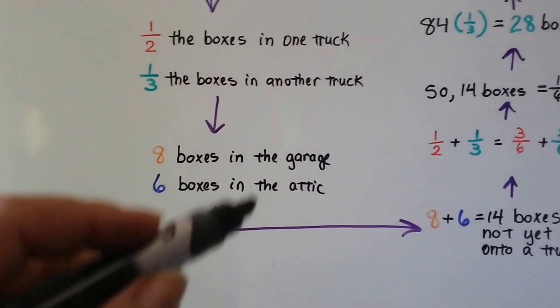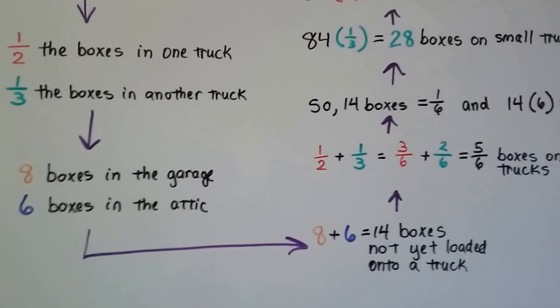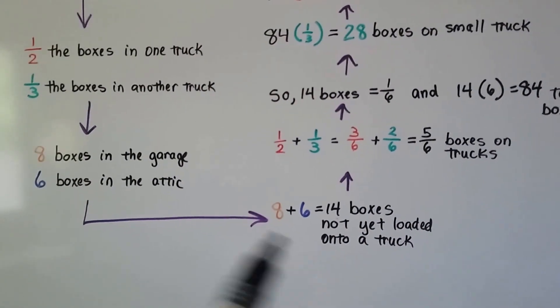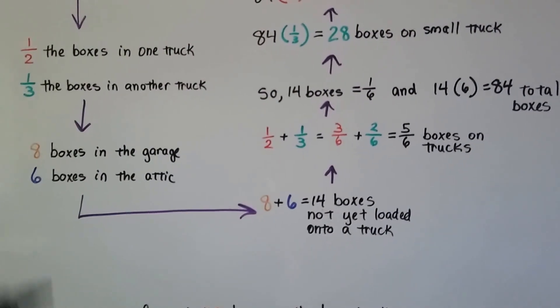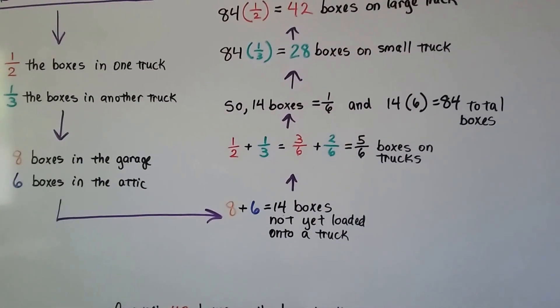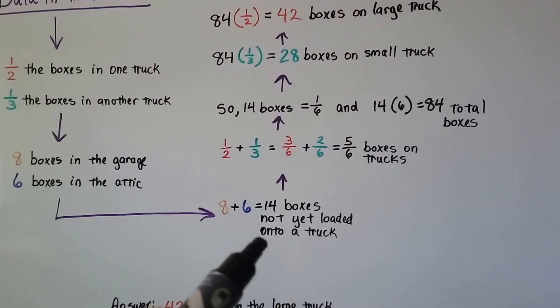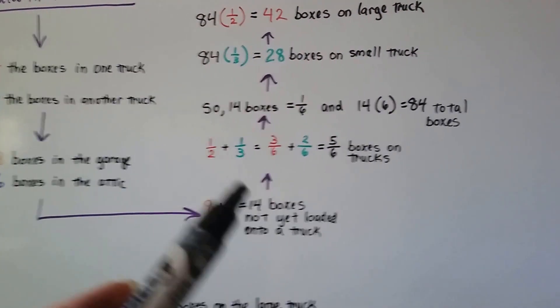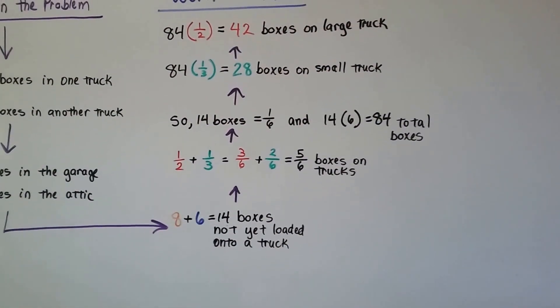So we're going to start with this and then we're going to work up. We're going to kind of make a U shape to show the work. So the eight plus the six equals 14 that are not yet loaded onto a truck. We also know that one-half plus one-third equals five-sixths. That means five-sixths of all their boxes are already on trucks. Well, 14 are not. So there's one-sixth missing. That 14 must be the one-sixth. That means 14 times six equals 84 total boxes.